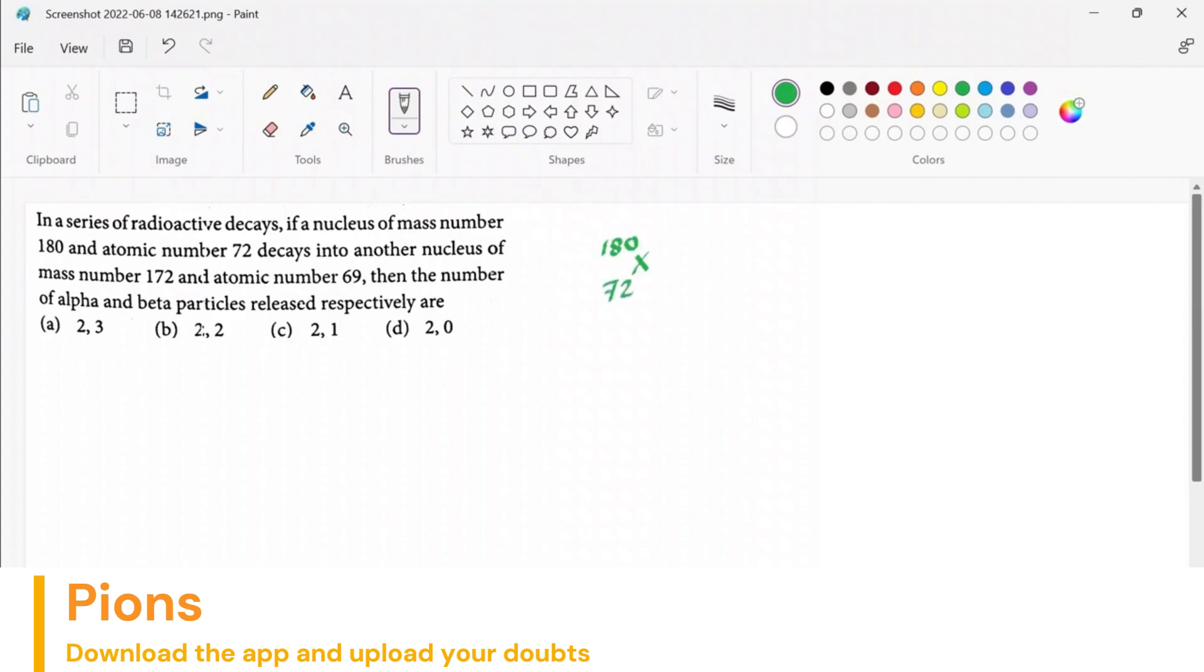That is decaying into another nuclei having mass number 172 and atomic number 69. If you have alpha particles, alpha particle is positively charged helium atoms, so helium atom is 2 and 4, and how many alpha particles we don't know, so let's write it x.